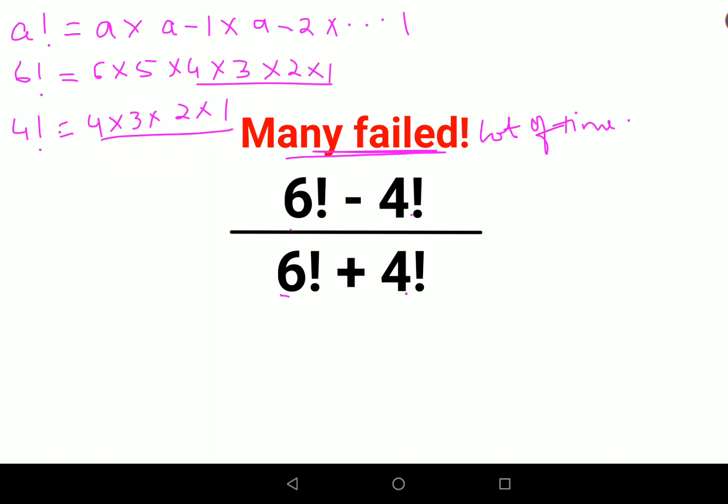So from this, if you see, this and this is common for both of the factorials. So I can say 6 factorial can be written as what? 6 into 5 into 4 factorial. So this comes out to be 30 into 4 factorial.